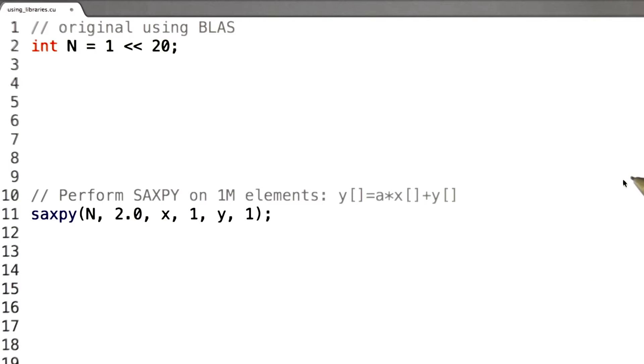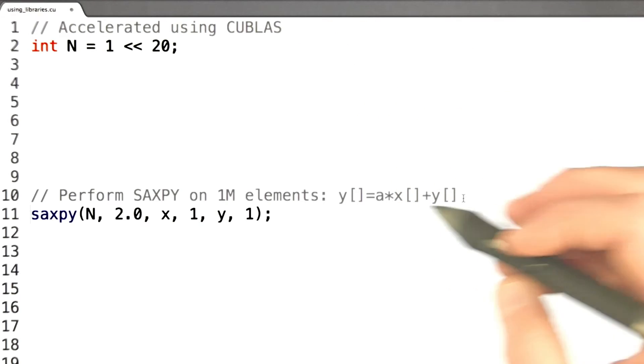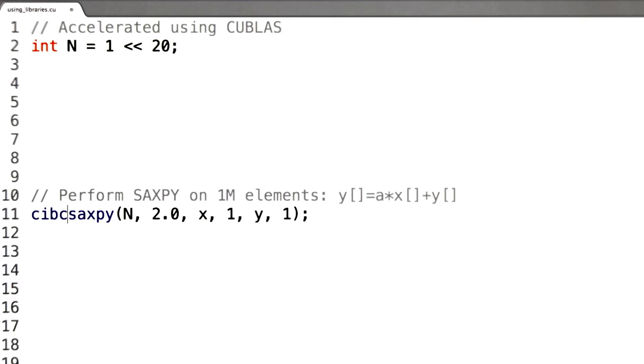This is the original BLAS code. If we want to run this on the GPU, then the first thing we're going to do is change the comment at the top. After we change the comment, we add a CUBLAS prefix and change these to be device variables.